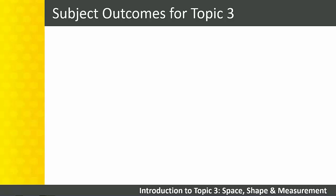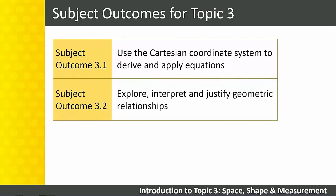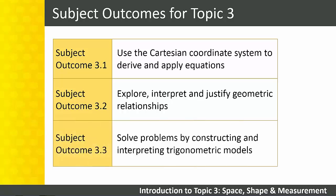Let's take a look at the subject outcomes for Topic 3 on page 9 of your subject guidelines. Subject Outcome 3.1: Use the Cartesian coordinate system to derive and apply equations. Subject Outcome 3.2: Explore, interpret and justify geometric relationships. Subject Outcome 3.3: Solve problems by constructing and interpreting trigonometric models.